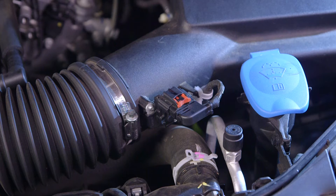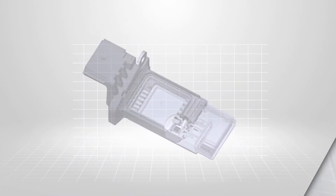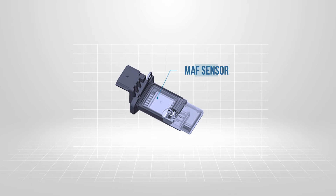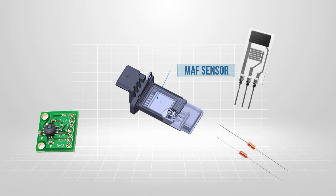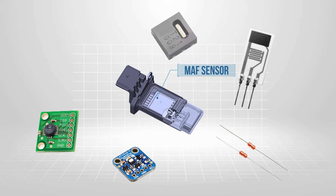We are now seeing eight wire MAF sensors, sometimes referred to as a multi-function mass airflow sensor or the mini weather station. This MAF sensor still measures airflow and intake air temperature but now also incorporates a humidity sensor, a humidity chip temperature sensor and a barometric pressure sensor.